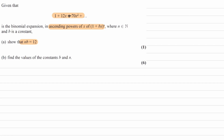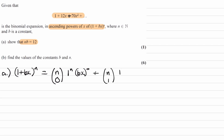Let's first do the binomial expansion of 1 plus bx to the power of n. The first three terms of that expansion will be: n choose 0 times 1 to the n times bx to the 0, plus n choose 1 times 1 to the n minus 1 times bx to the 1, plus n choose 2 times 1 to the n minus 2 times bx to the 2. Anything choose 0 is always 1. Anything choose 1 is always that value — so n choose 1 is n, 5 choose 1 is 5, and so on — giving us n.